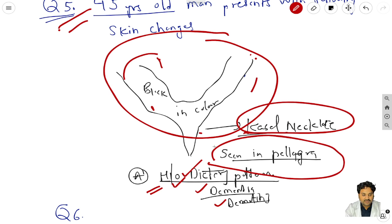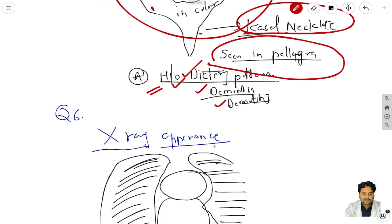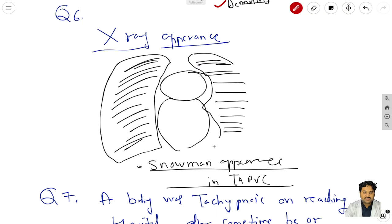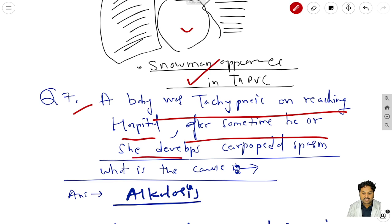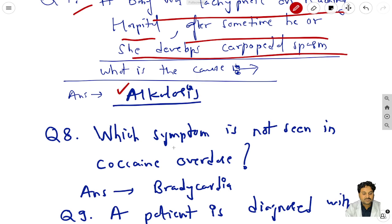Question 6: the X-ray appearance is like the snowman appearance, which is seen in TAPVC. Question 7: a baby was tachypneic on reaching the hospital; after some time he or she will develop carpopedal spasm. What is the cause? The cause is alkalosis.